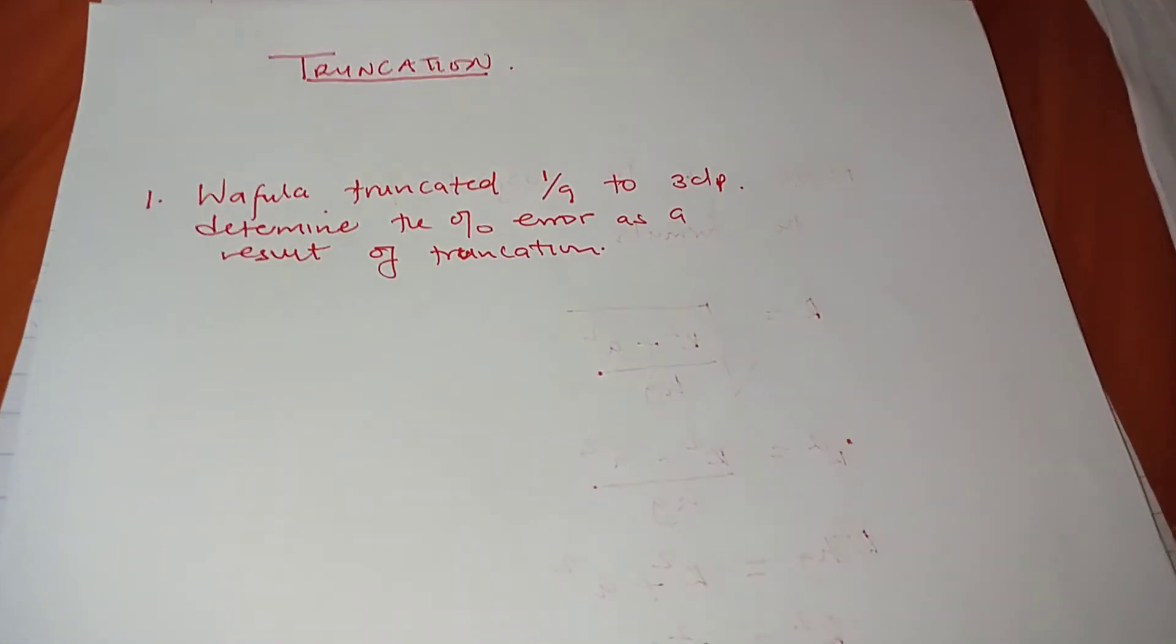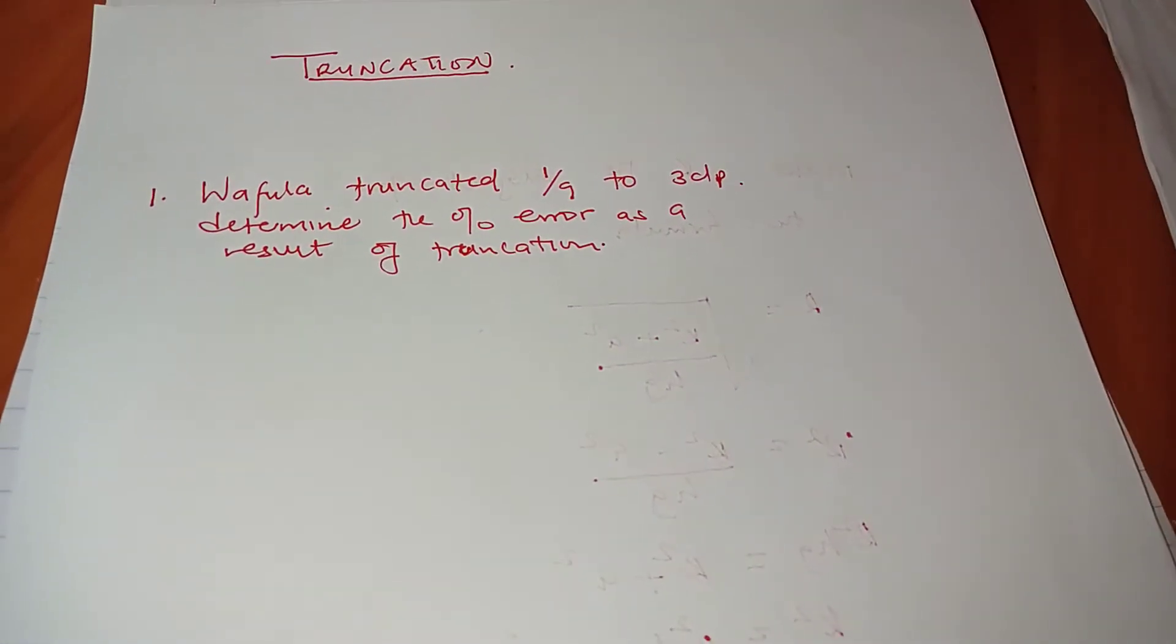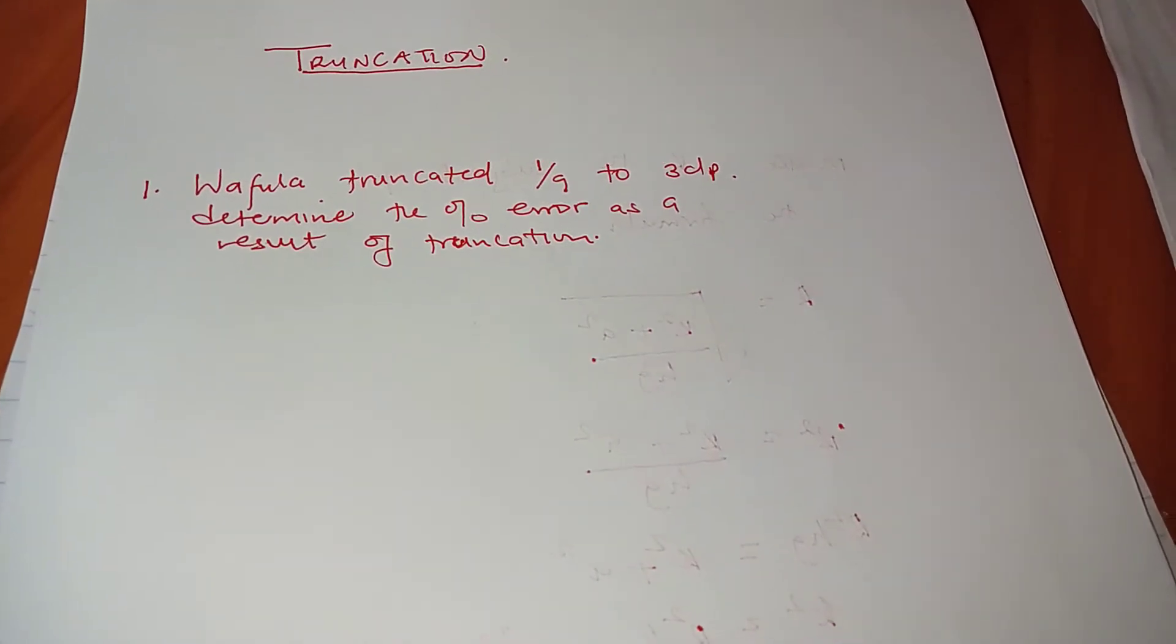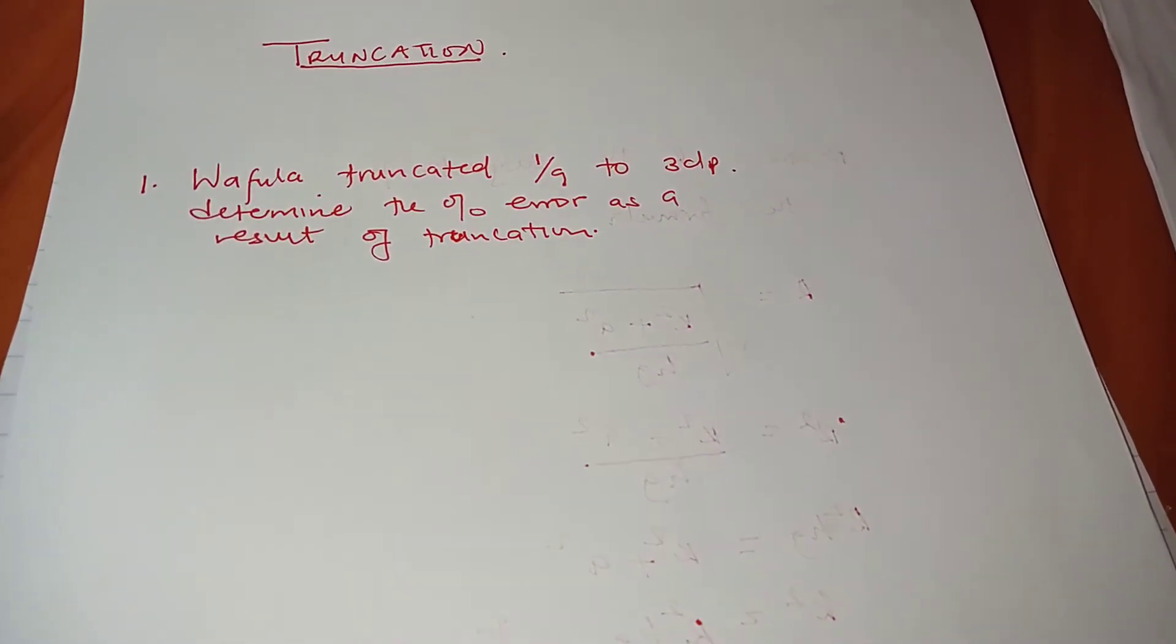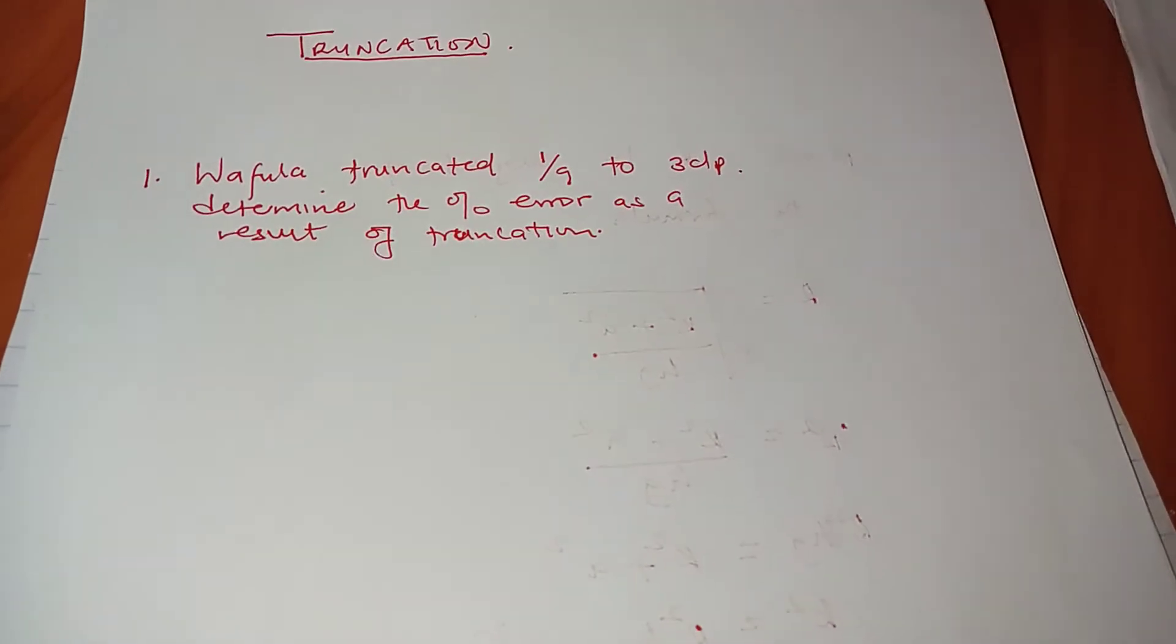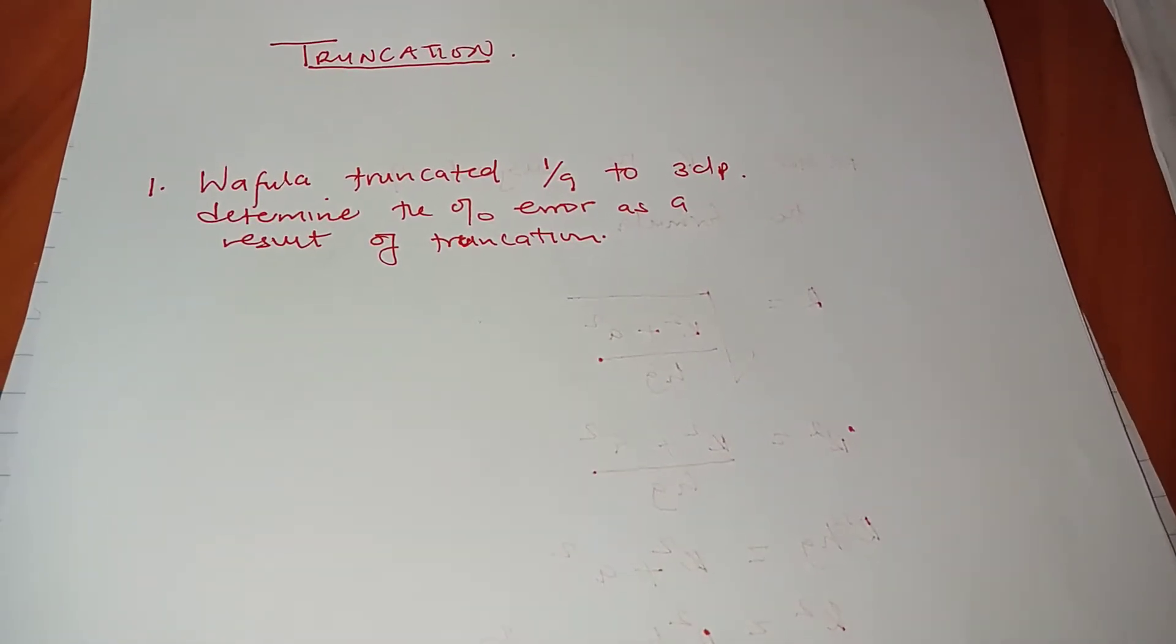I've not truncated 1 over 9 to 3 decimal places and you're supposed to determine the percentage error arising from that truncation. And it's very important that I mention what truncation is.